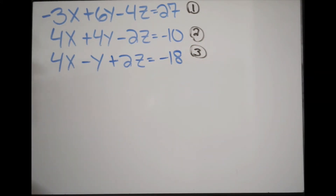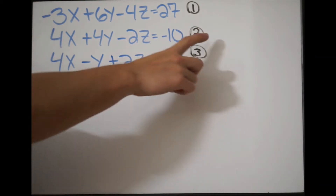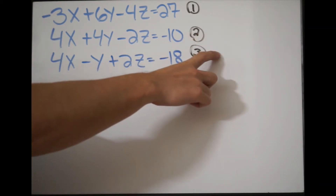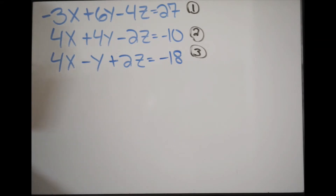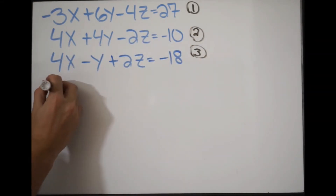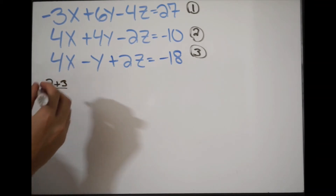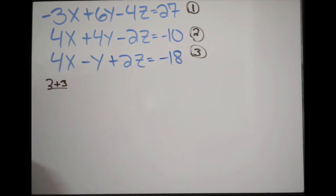We want to look for possible eliminations that we can make. If I look at variable z, when I look at equation 2 and 3, if I use addition to eliminate, the z's will cancel and I'll just be left with x and y. So that's going to be my first move — I'm going to use equation 2 and 3 to eliminate z.